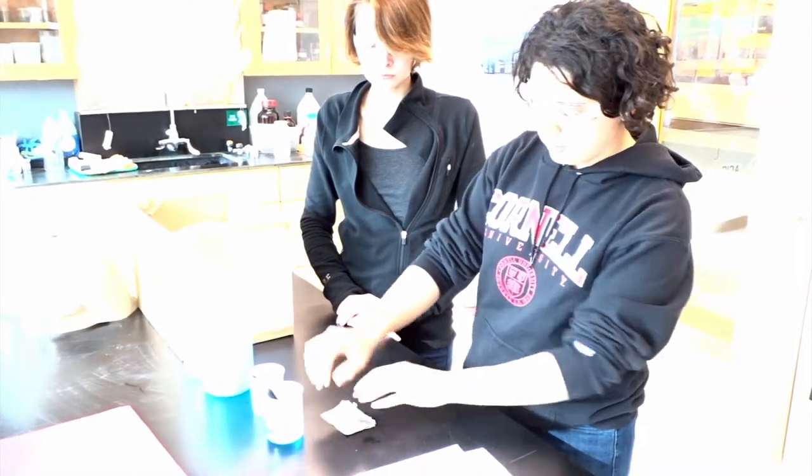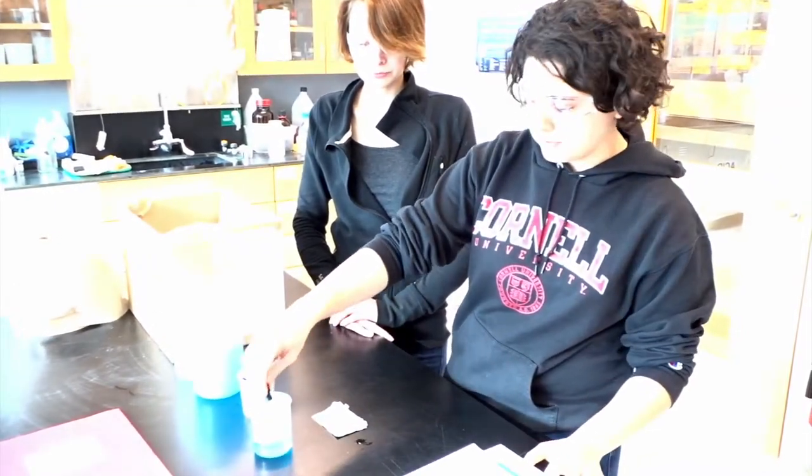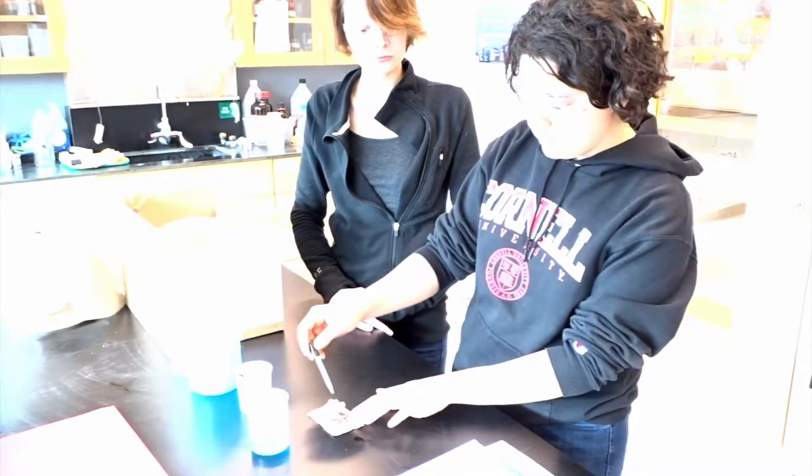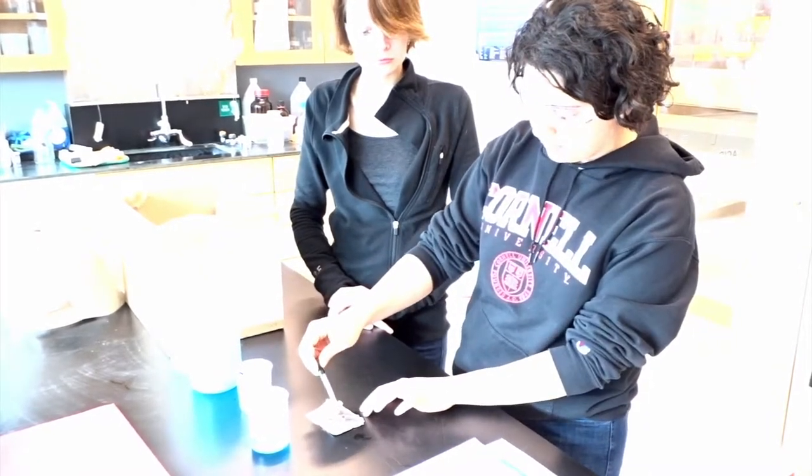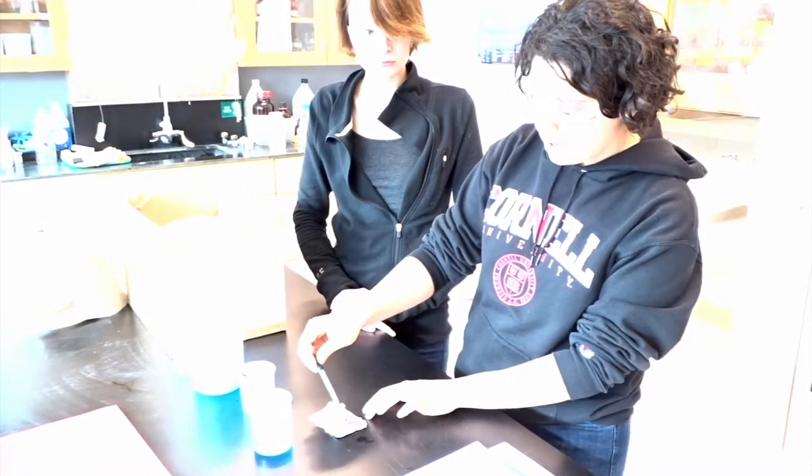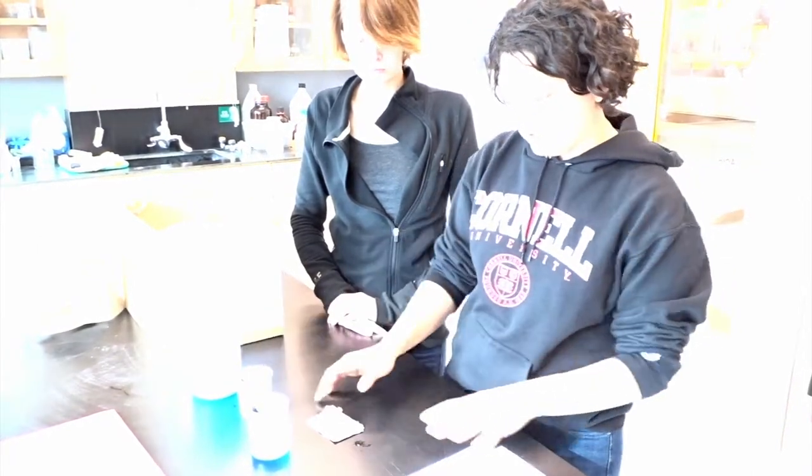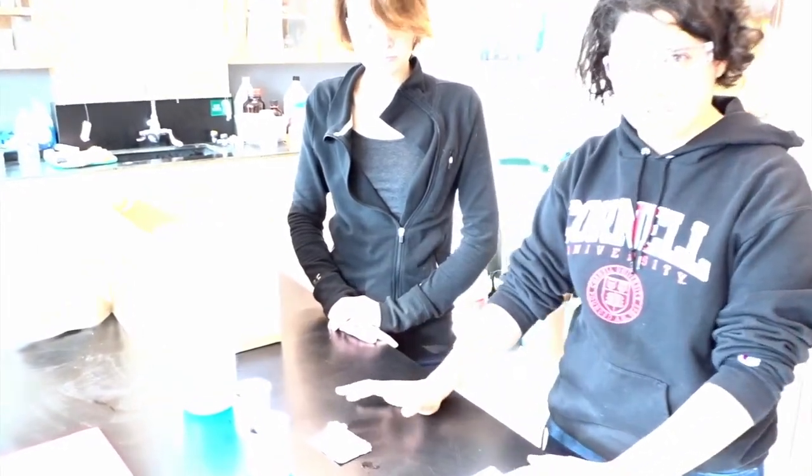And so when you have your aluminum, you take your solution of copper sulfate. And the first thing the students should do is drop a little bit of your copper sulfate solution onto your aluminum foil. And what you should notice is that there is nothing that's really going on. And this is because you need some sort of catalyst to activate the reaction.